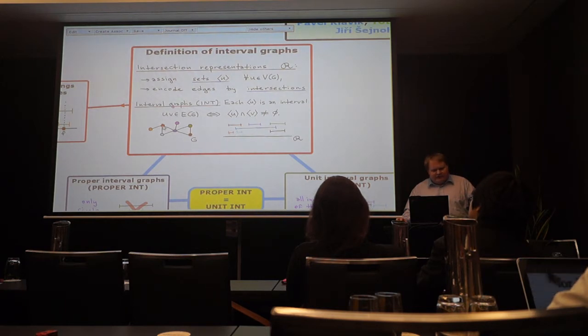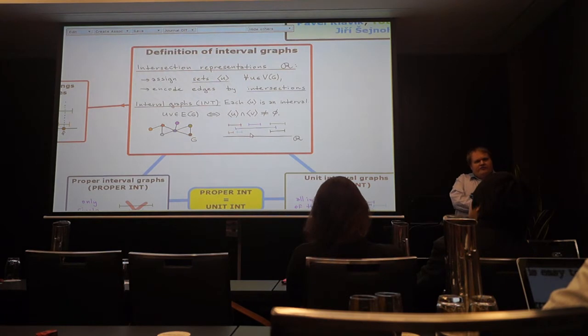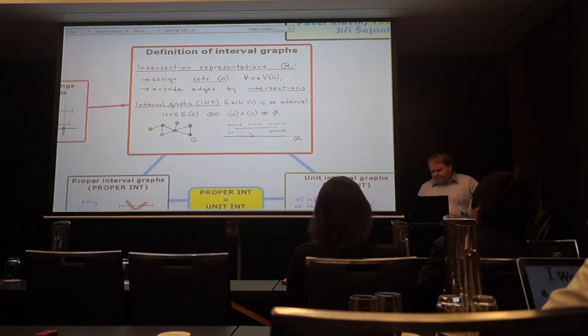So here you can see for instance red and orange are intersecting as intervals. So they are adjacent, but red and green are not intersecting. So they are not adjacent. So then a natural question for instance is which graphs can be done in this way or you can also choose other ways. How you can draw things and study them.